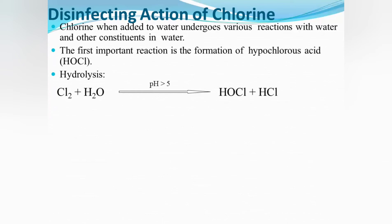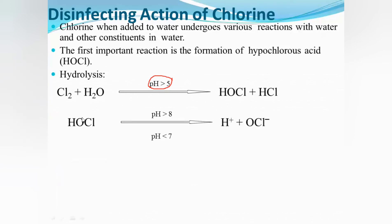When chlorine is added to water, it converts to hypochlorous acid HOCl and hydrochloric acid HCl. The water sample pH plays an important role in this reaction.